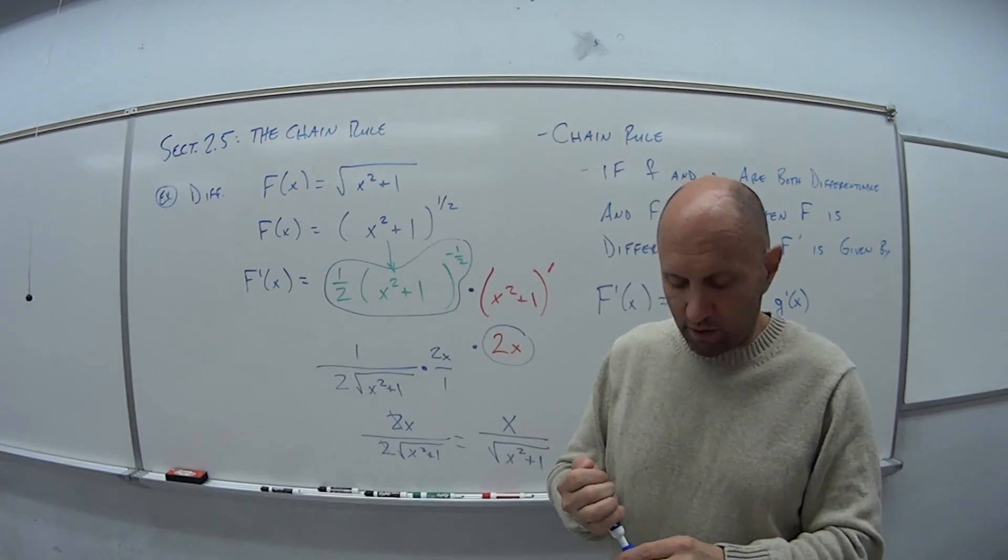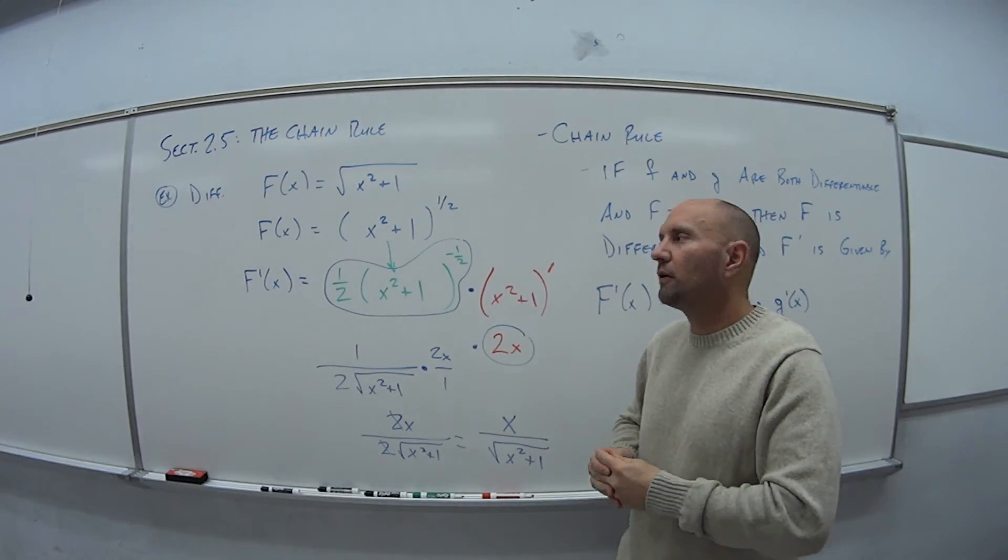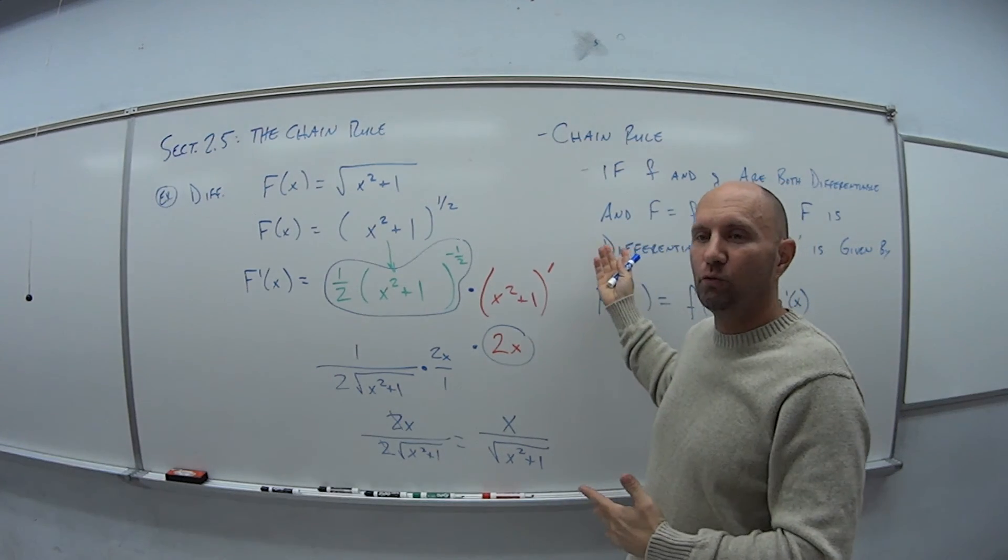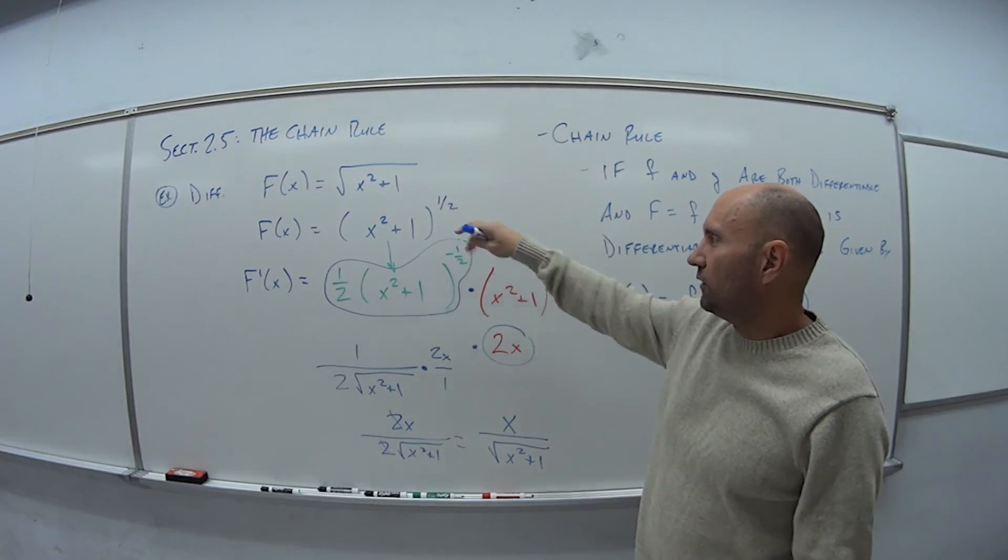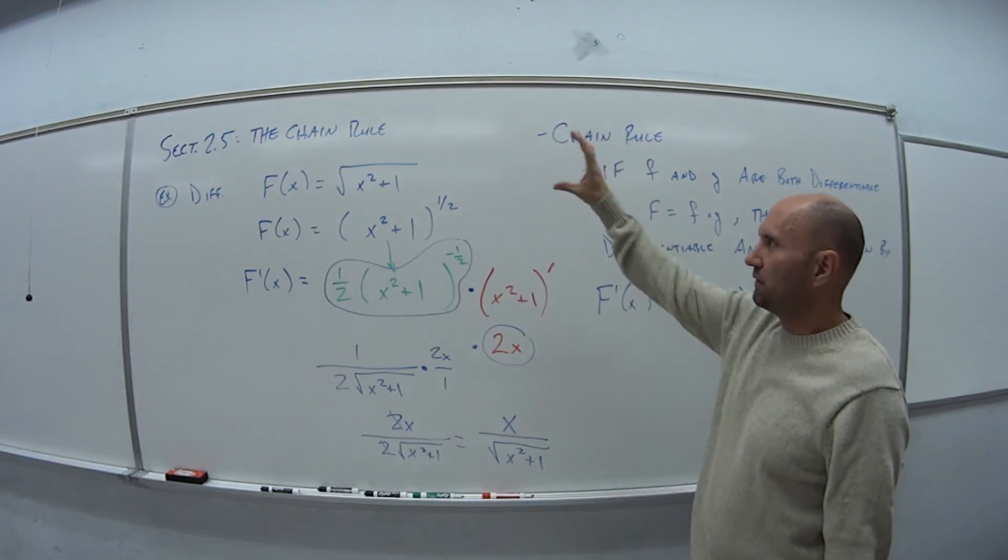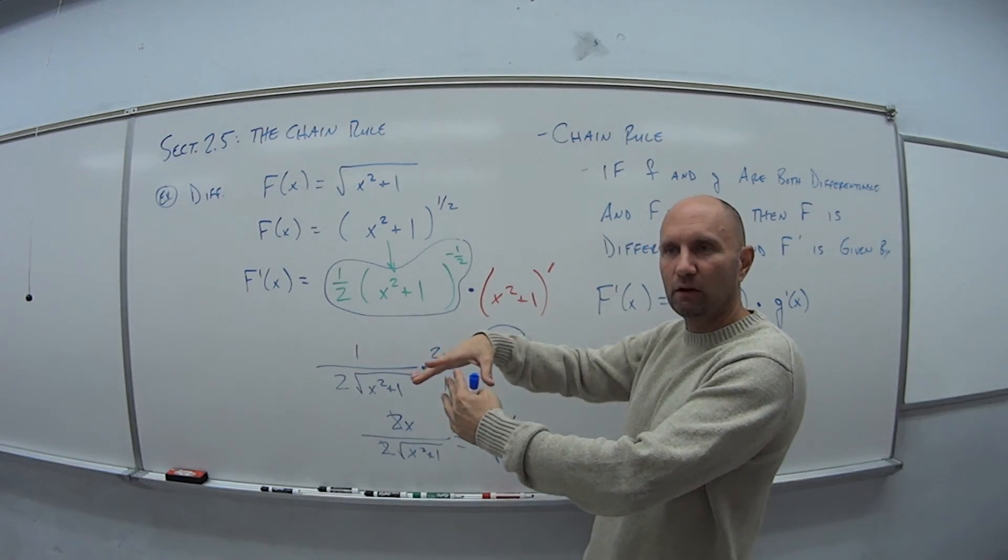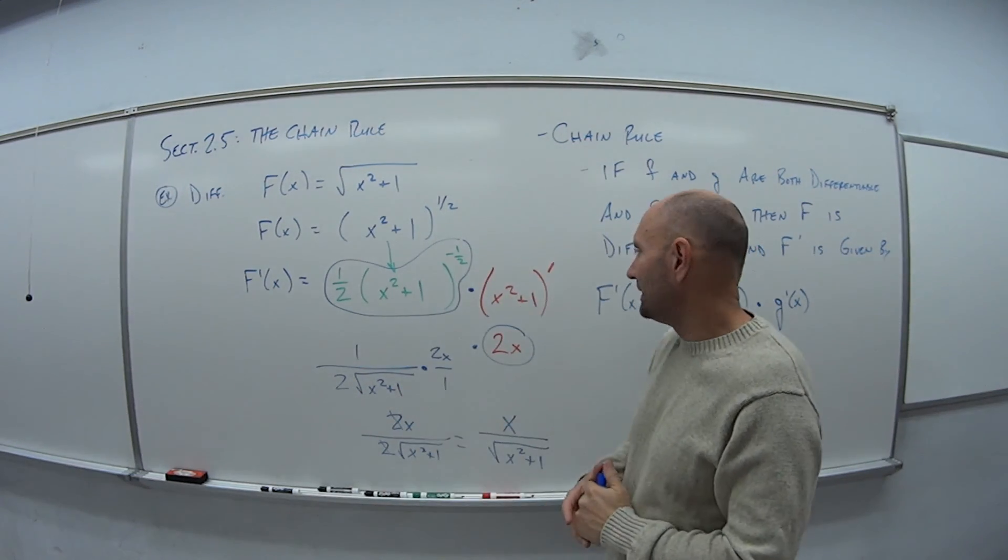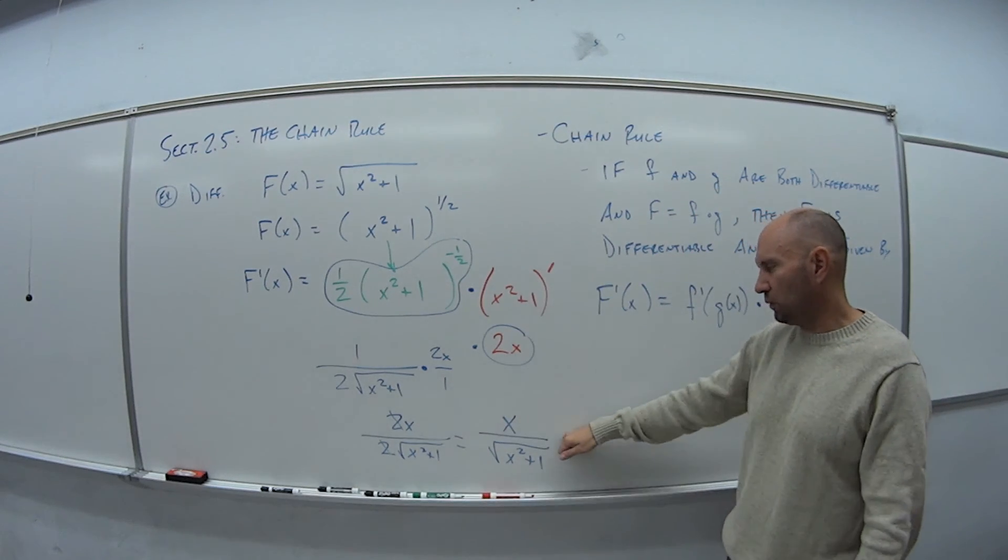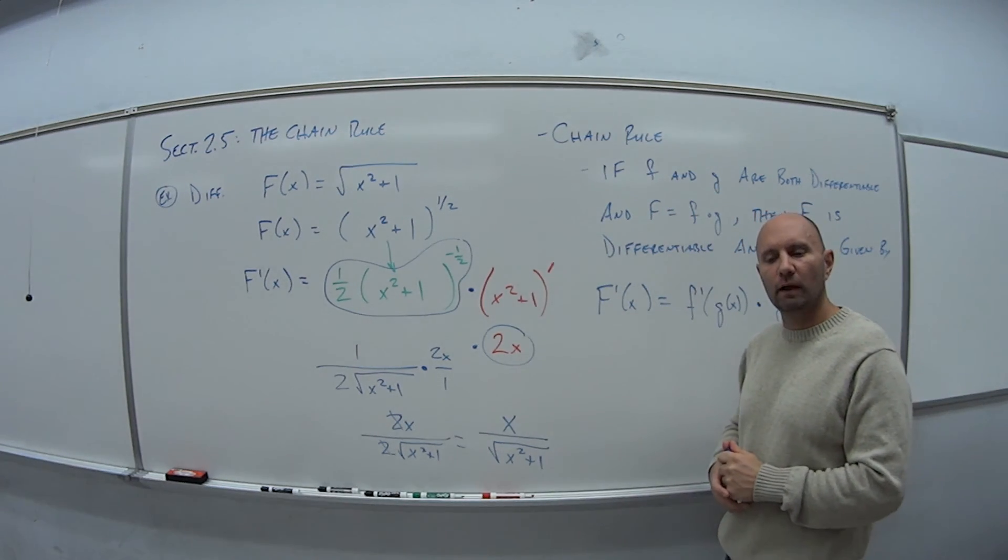So that's it. So we're starting with a function that none of our other rules would work with. We'd have to apply the chain rule. And then here's an example. So we take the derivative of the outside piece, leave everything else inside alone, then take the derivative of the inside. And for this example, we would get x over square root of x plus one.